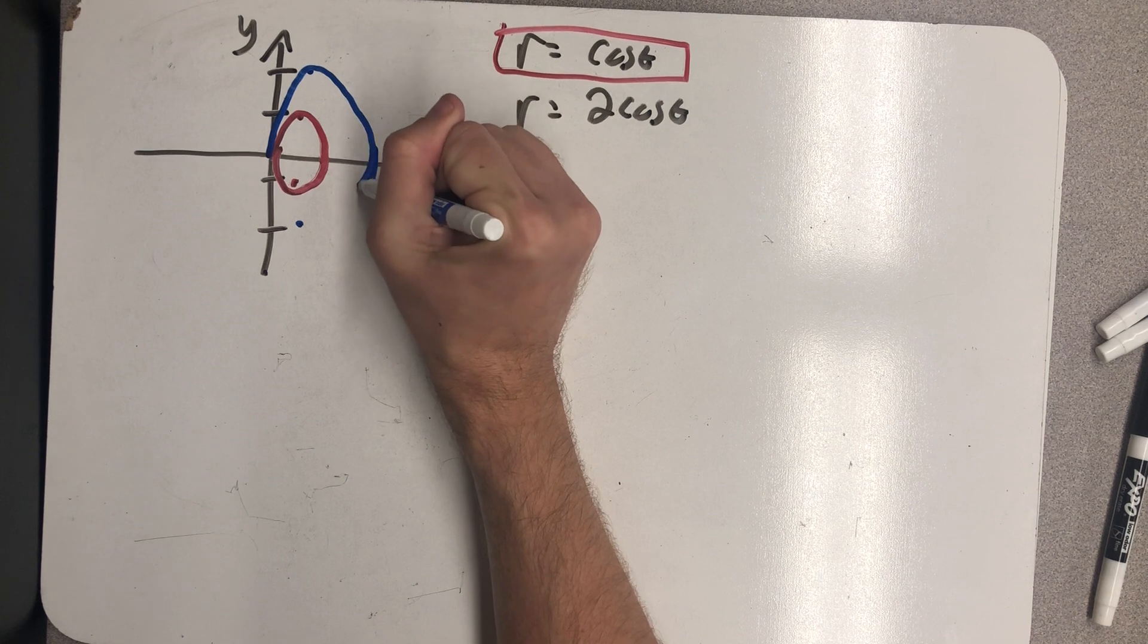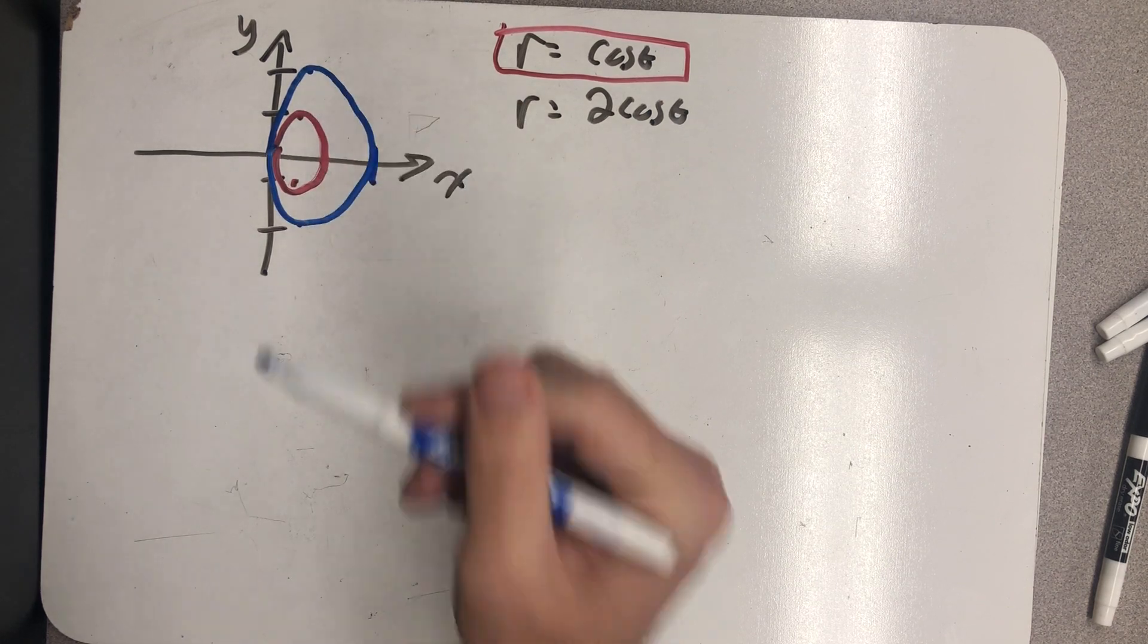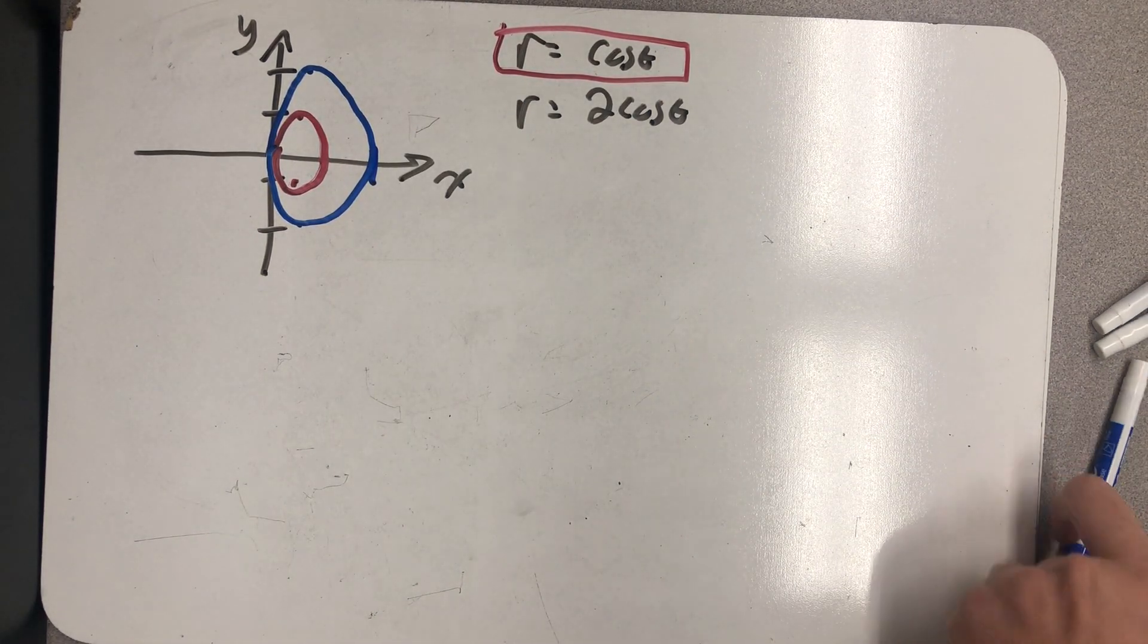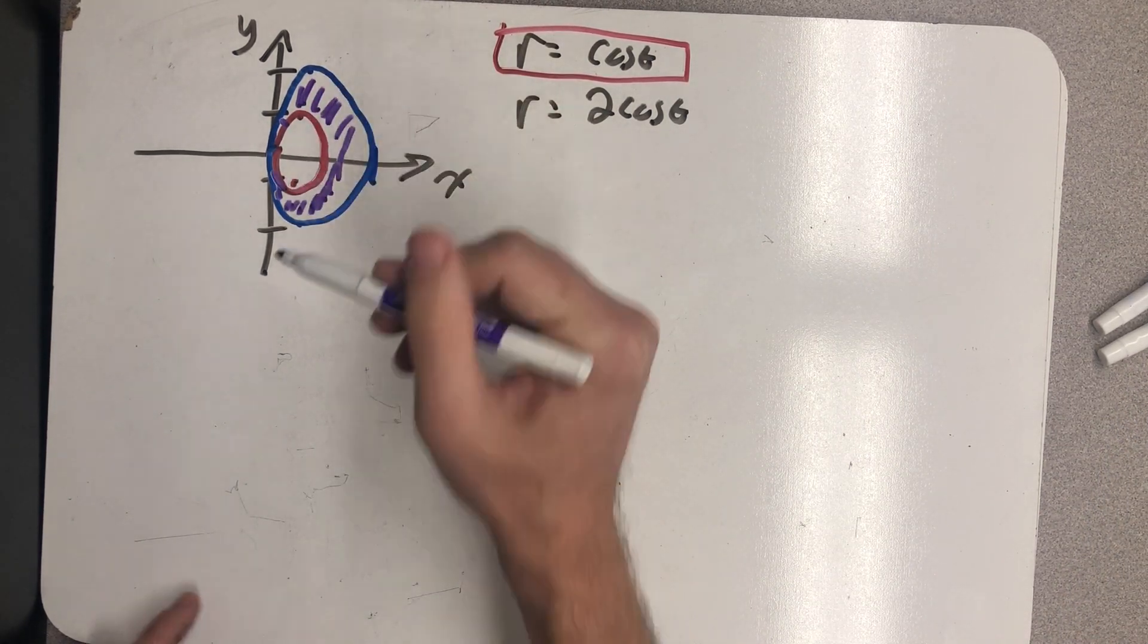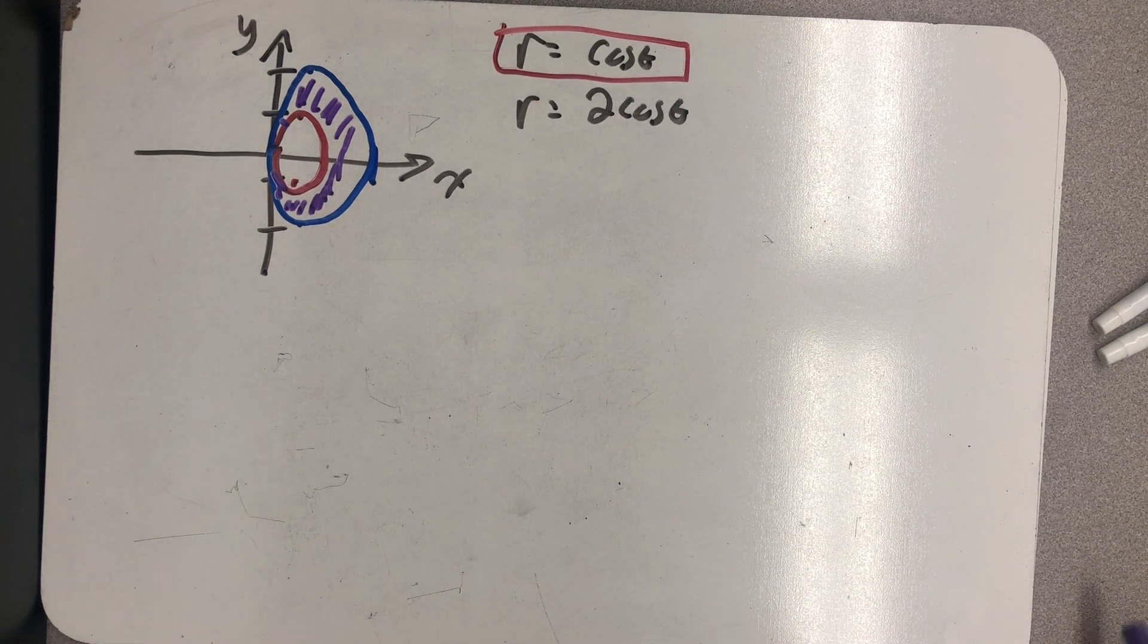Those don't even look like circles, but it gives us a start, and we'll just go with it. All right, so the base lies between there. The top lies in a plane.